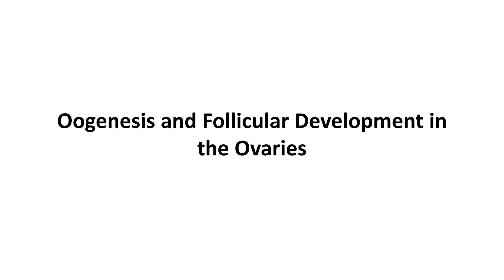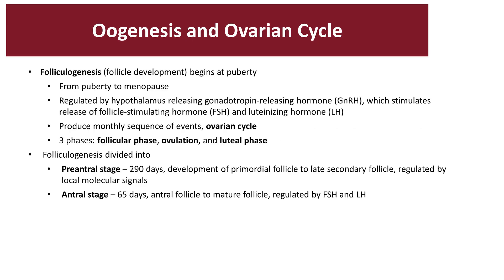Oogenesis is the maturation of a primary oocyte into a secondary oocyte. Oogenesis begins prior to birth and continues all the way through menopause, which is the time that a female no longer has a menstrual period. Prior to birth, the ovary contains what we call the primordial or germ cell lines called the oogonia. These are the early stages of the egg cell; these cells are diploid, and during fetal life they undergo mitosis and form the primary oocytes. They go through the different phases but pause in prophase.